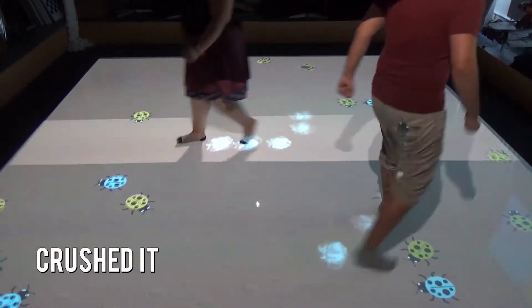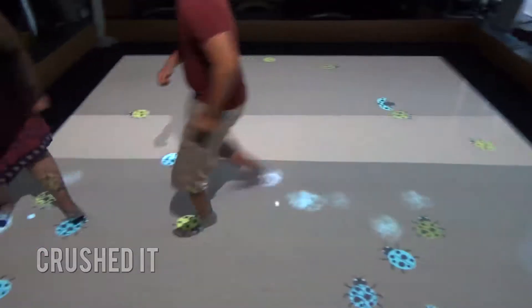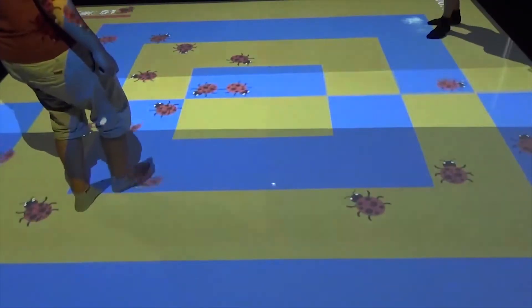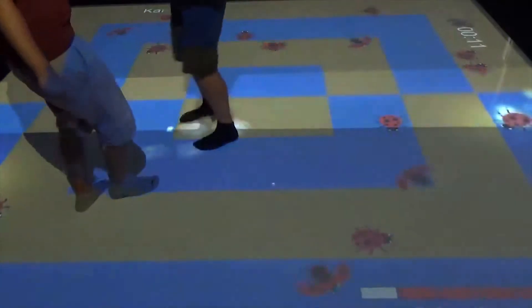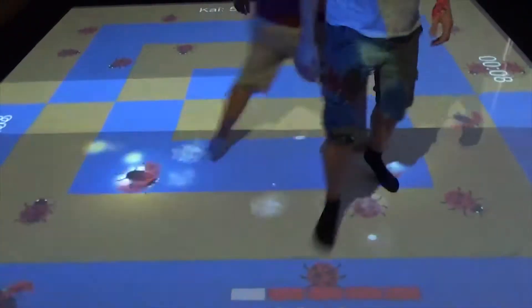We present our game Crushed It. We used an interactive pressure-sensitive floor and paired it with a projector system which overlapped images to reduce occlusion by the player on the floor.